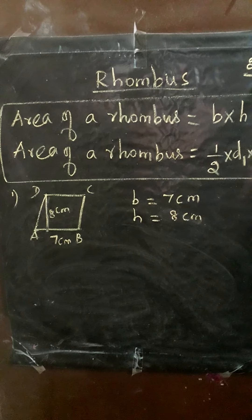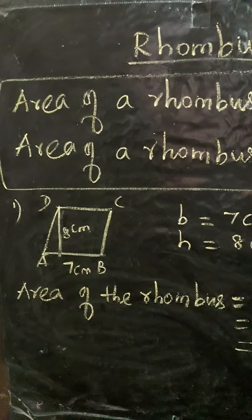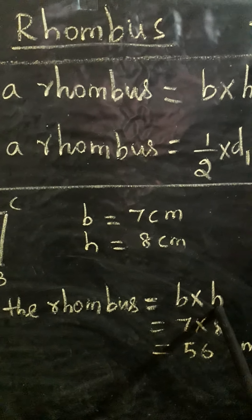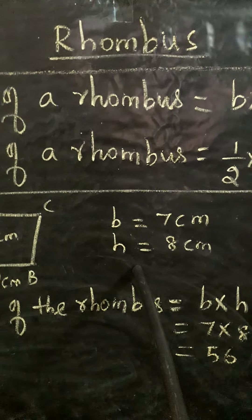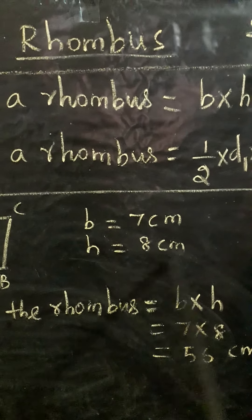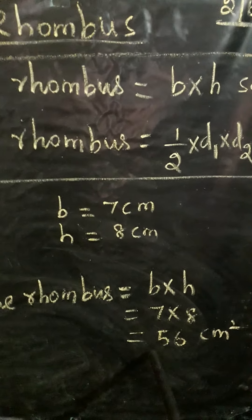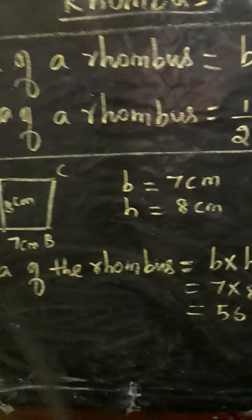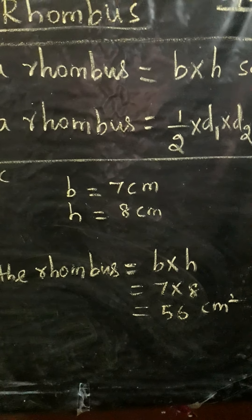First, write the area of rhombus formula. Area of rhombus equals B into H. Here B equals 7 centimetres and H equals 8 centimetres. Substitute the values into this formula — we get 7 into 8, which is 56. So the area of the rhombus equals 56 centimetres square.